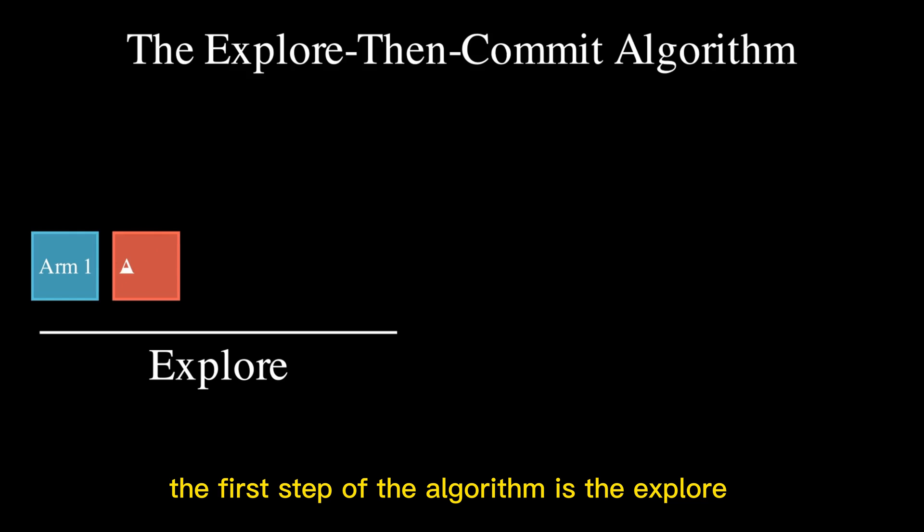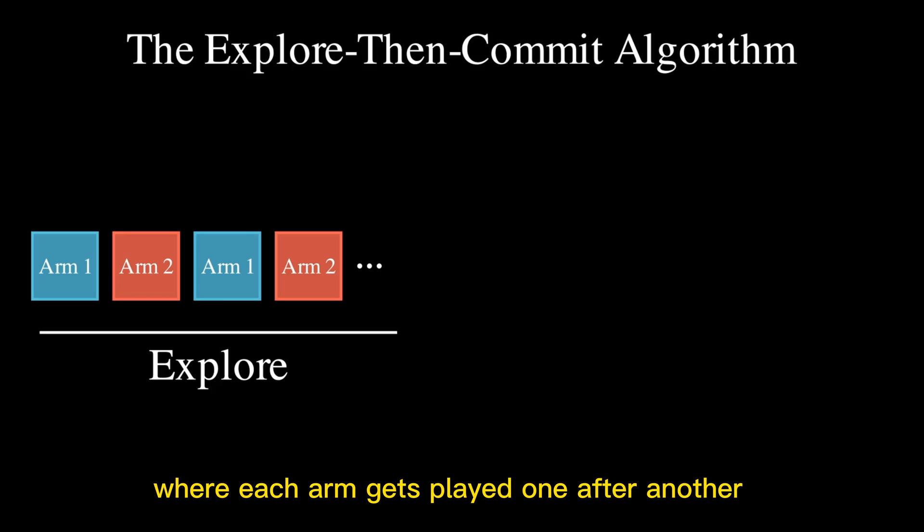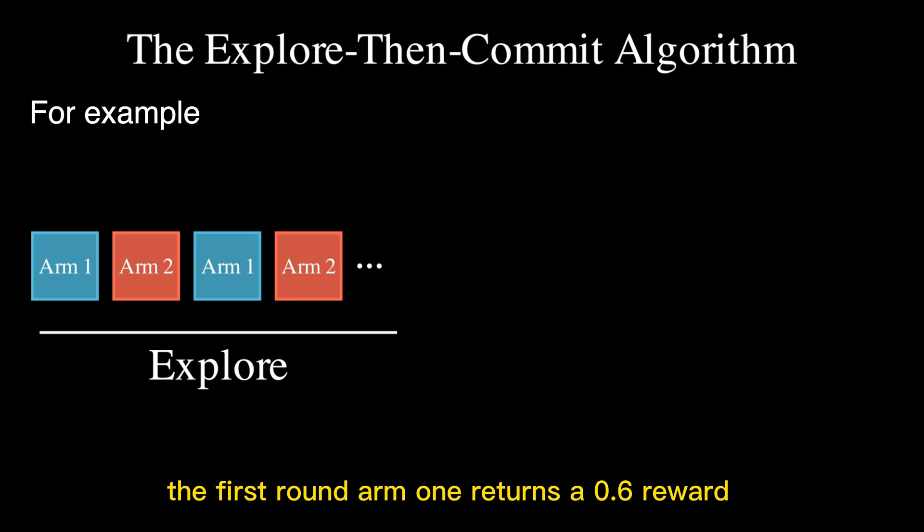The first step of the algorithm is explore, where each arm gets played one after another for a number of times. In the first round, arm 1 returns a 0.6 reward. Second round, arm 2 returns 0.7. Then arm 1 returns 0.5, and then arm 2 returns 0.9.